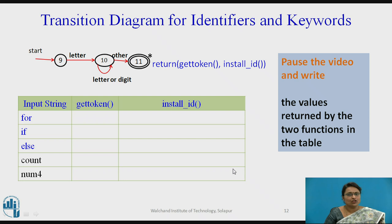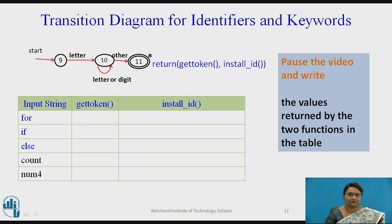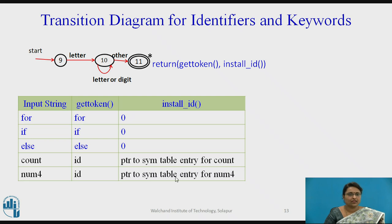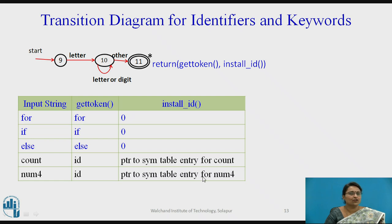Now pause the video and write the values returned by the two functions get_token and install_id for the given input strings. For if and else, which are keywords, the tokens are the keywords themselves and install_id returns zero. For count and num4, which are identifiers, ID is the token and their symbol table entry pointer is returned.